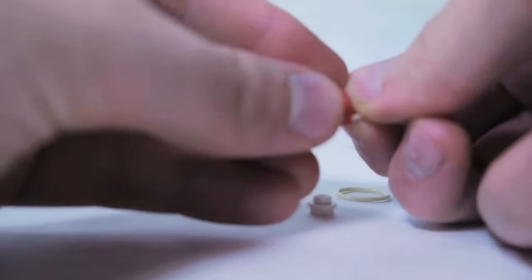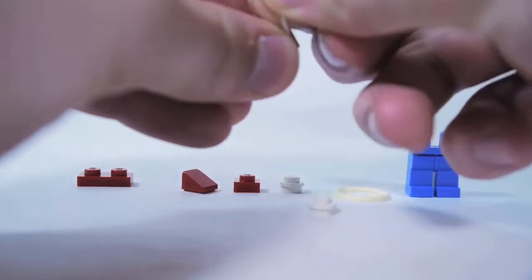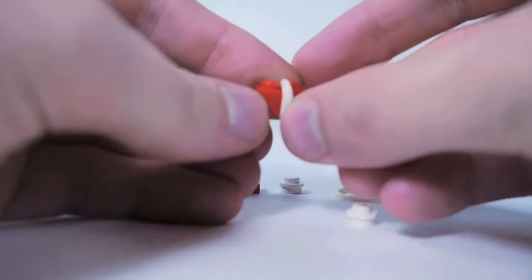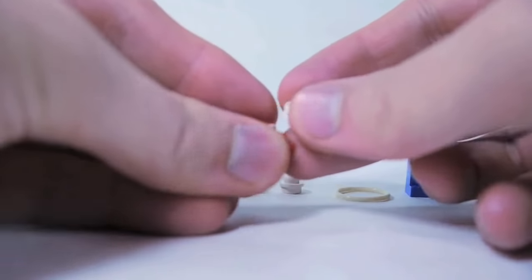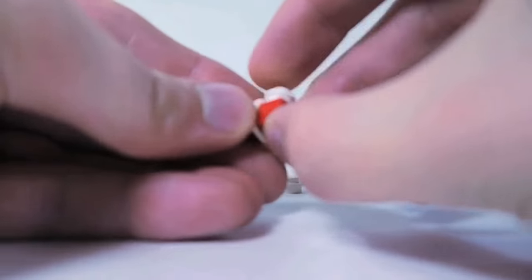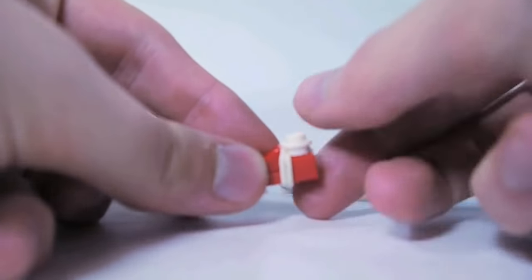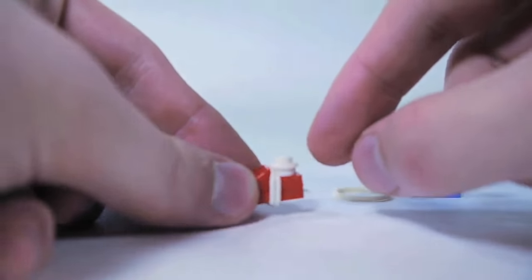Wrap it around once, wrap it around a second time, make sure it's as far forward as possible, and then fit a 1x1 white round plate there.